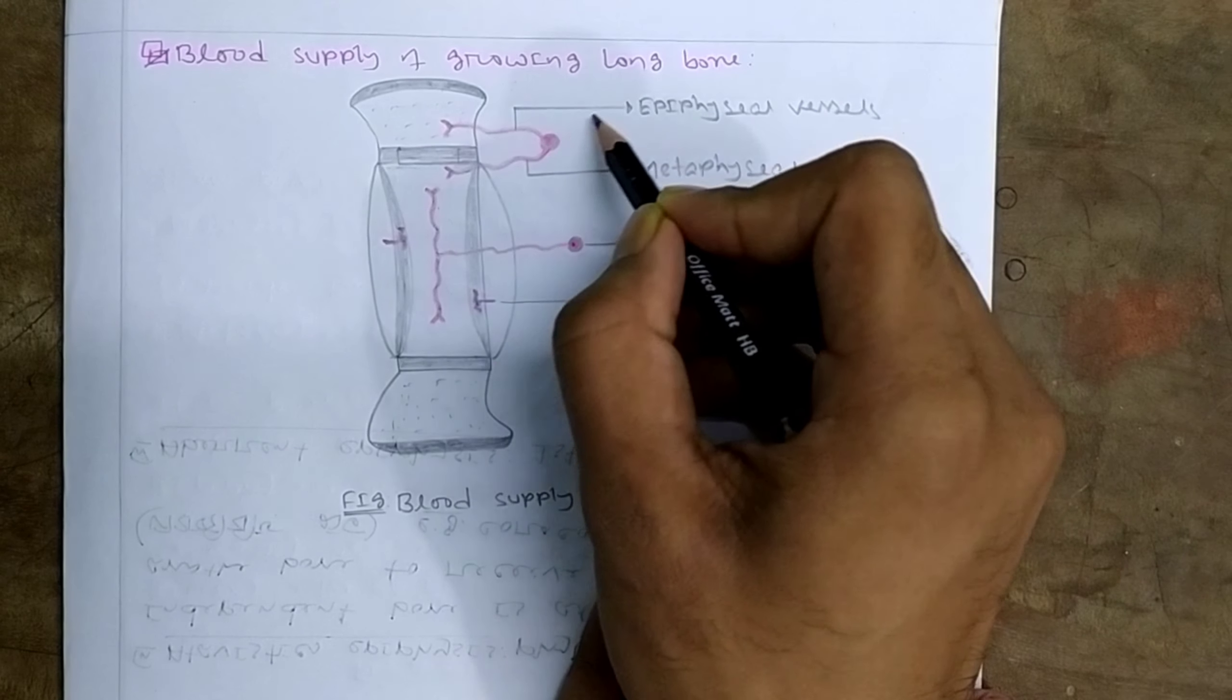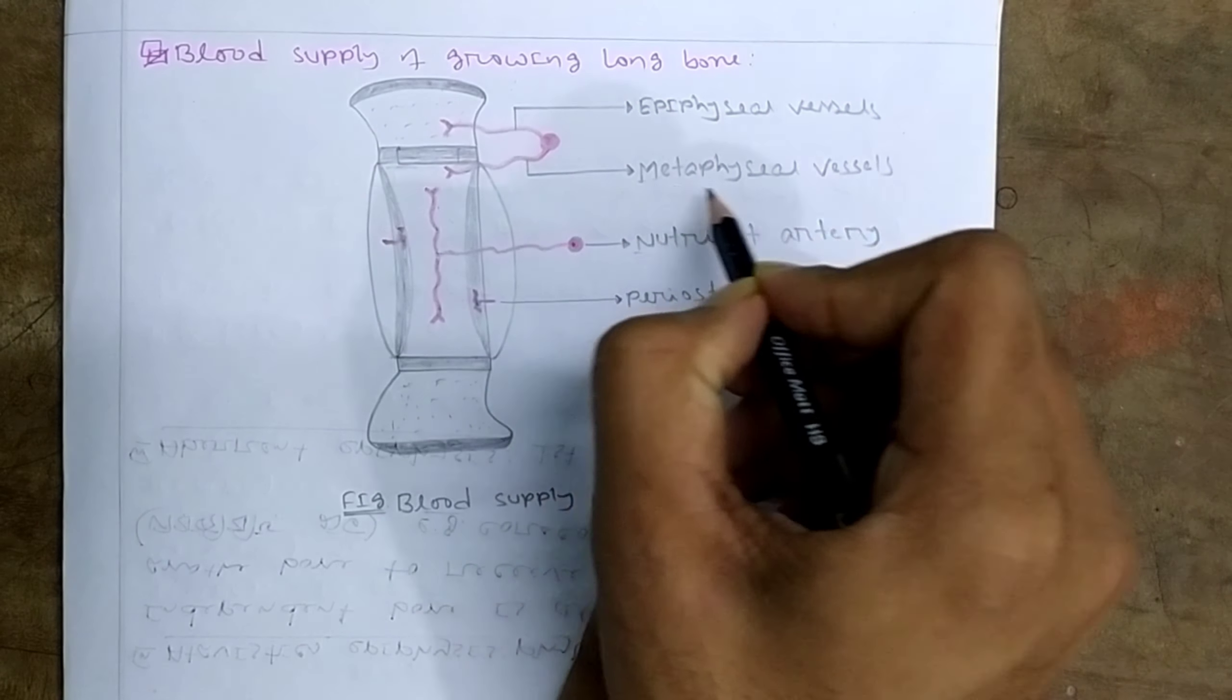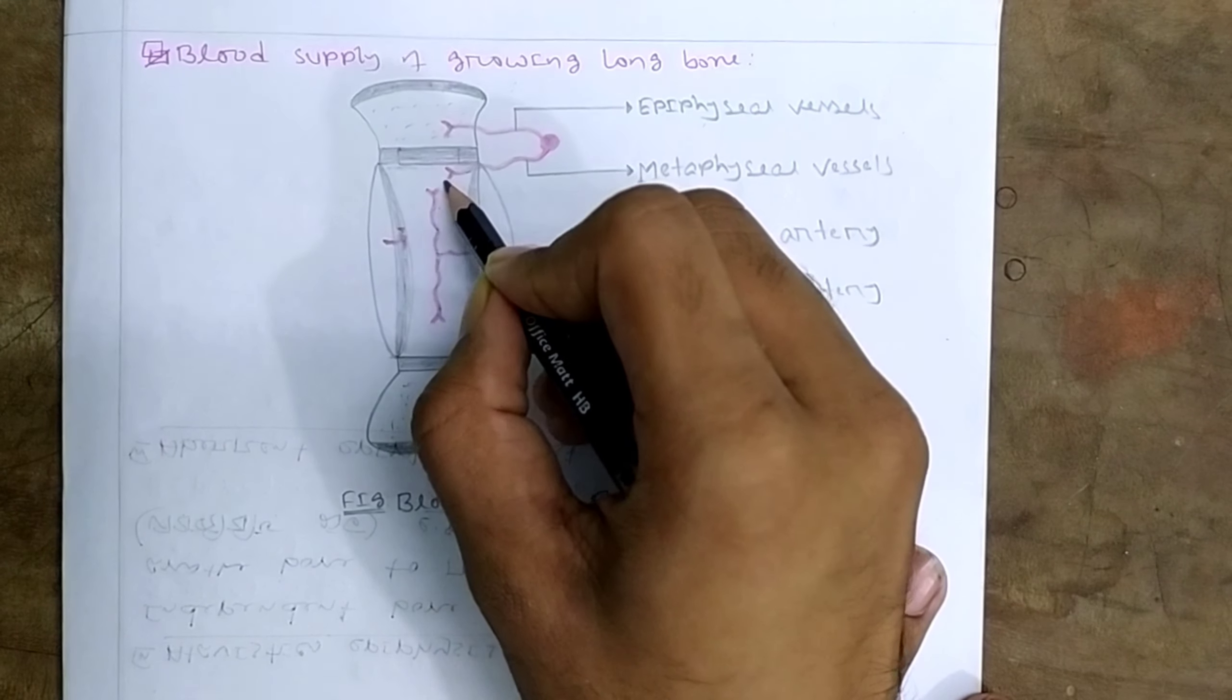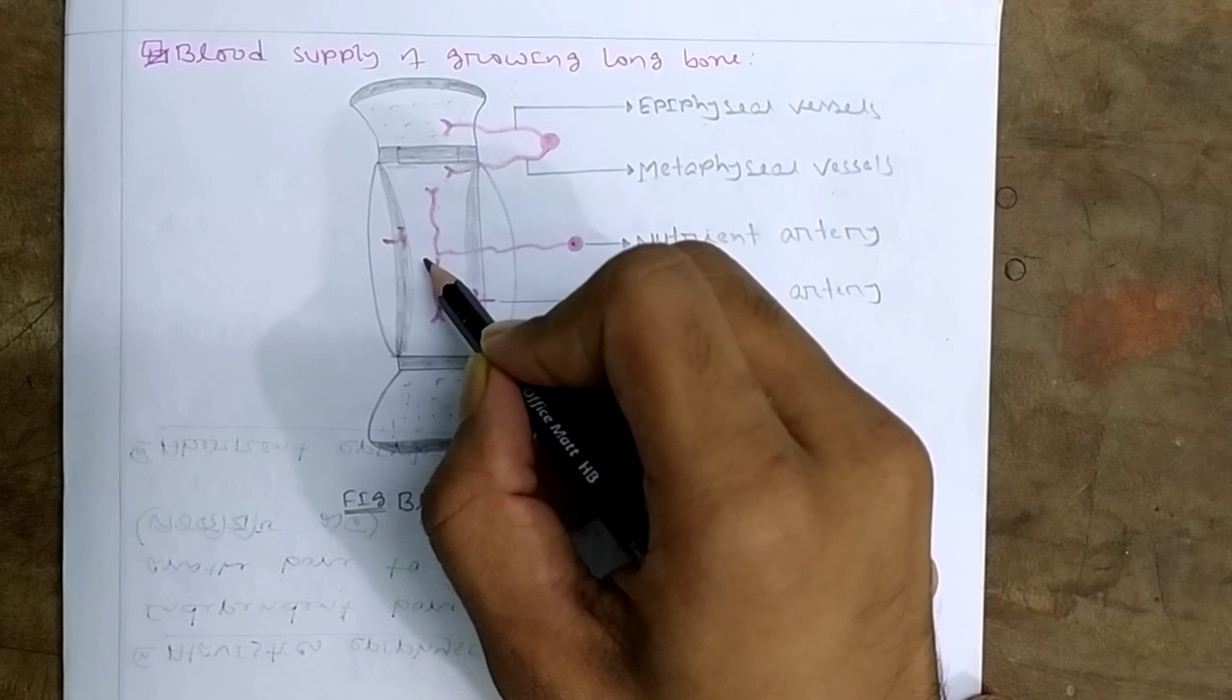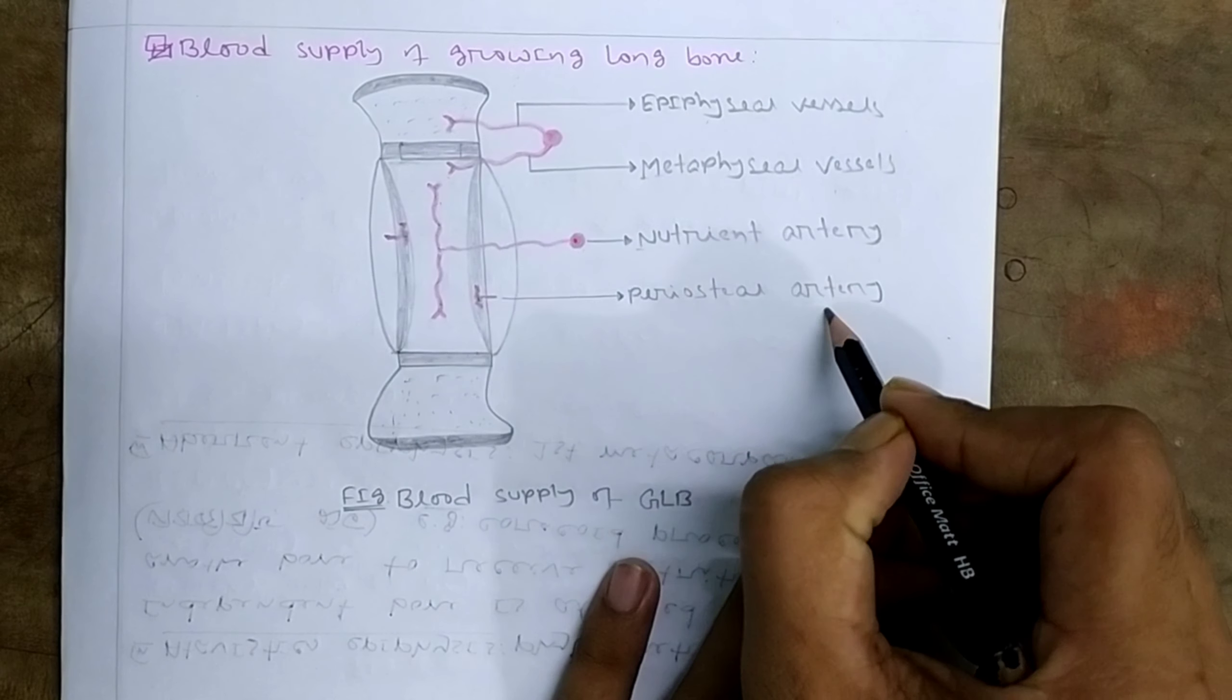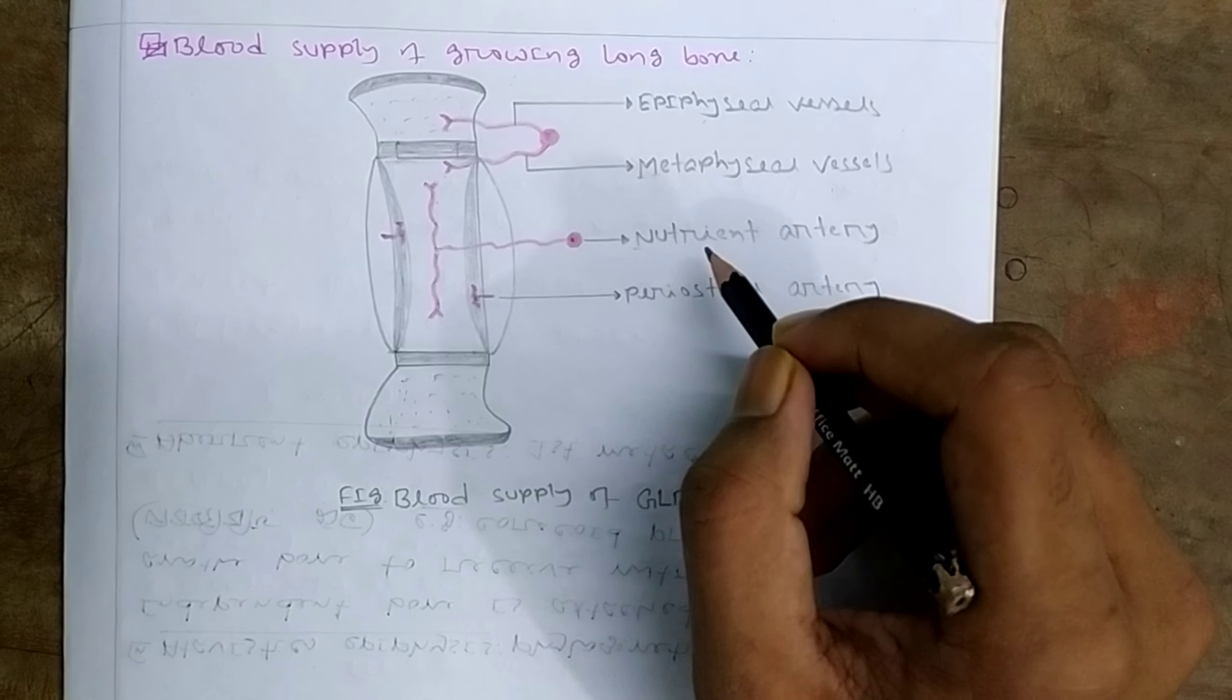The epiphyseal vessel supplies the epiphysis. The metaphyseal vessel supplies the metaphysis. This is the epiphyseal vessel.